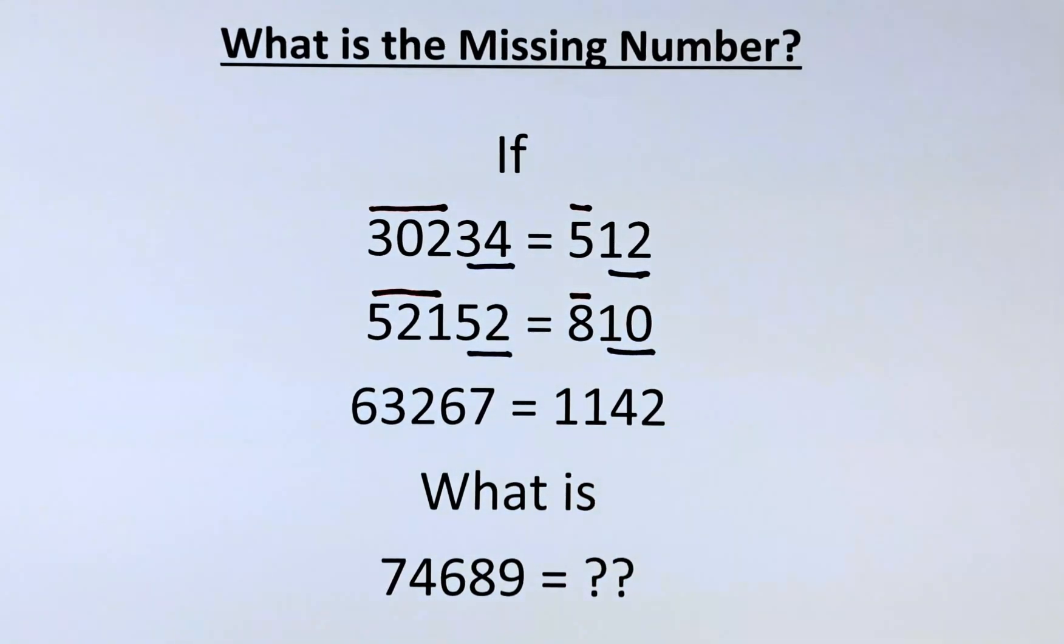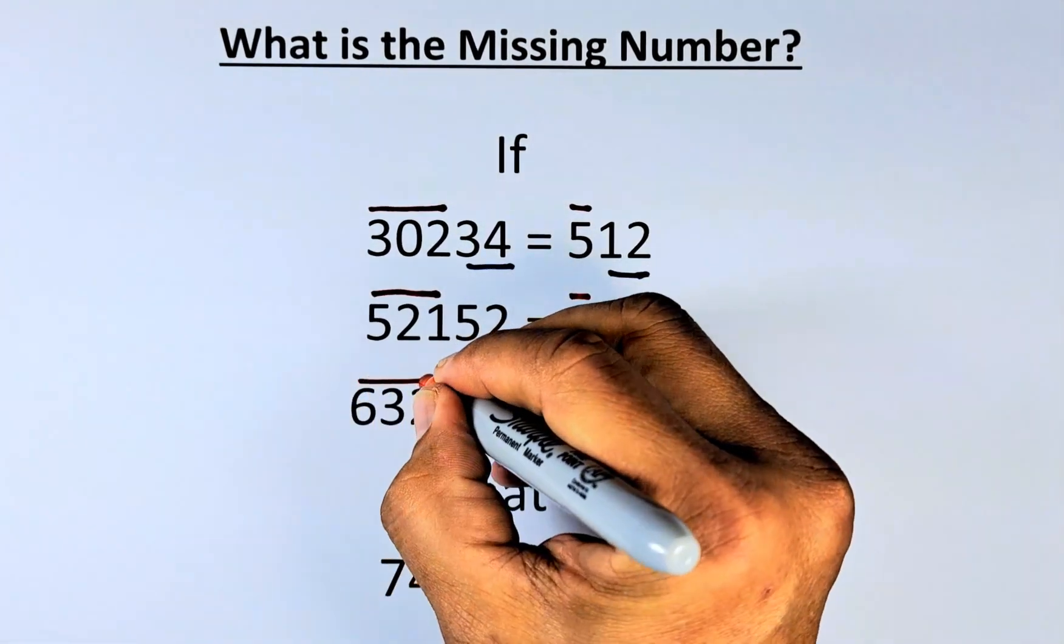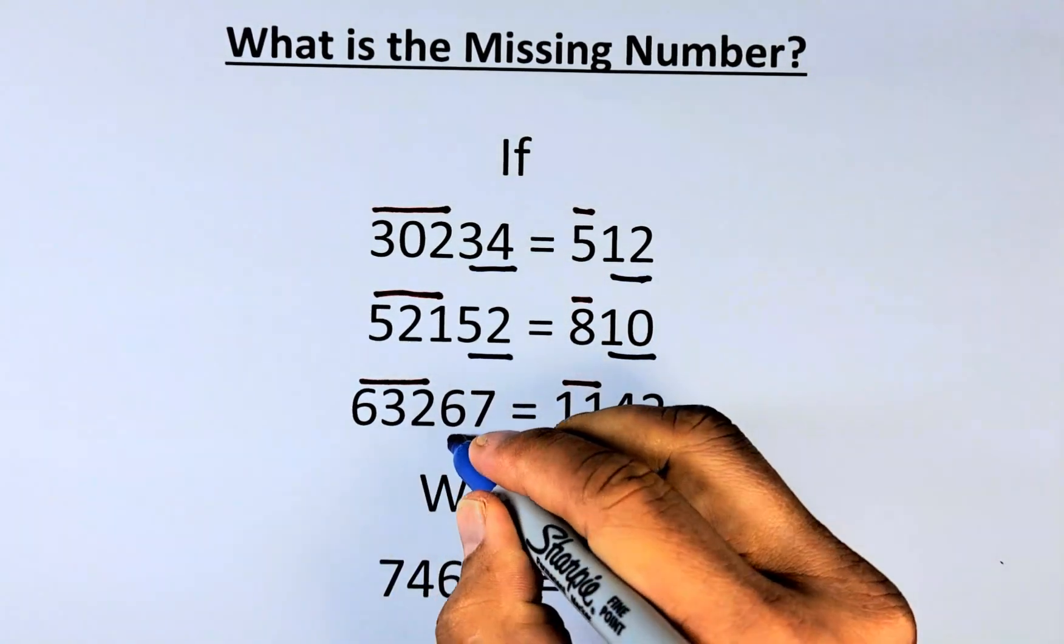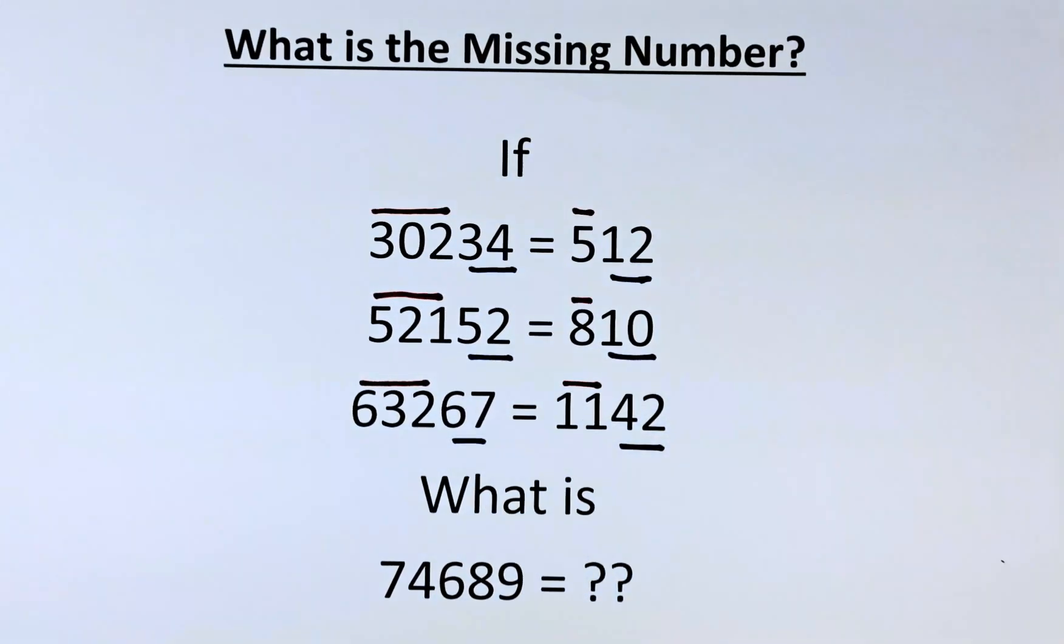And in the third row, we have the same thing. 6 plus 3 plus 2 will give us 11. And then 6 times 7, that will give us 42.